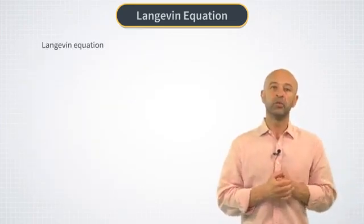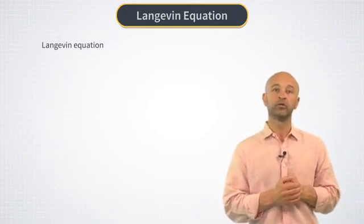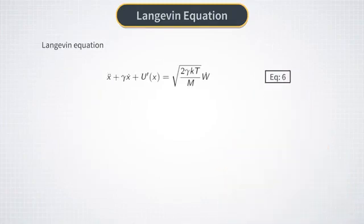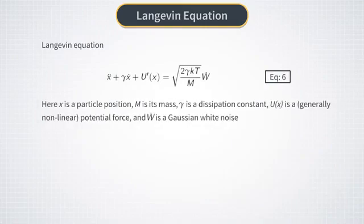The Langevin equation for a Brownian particle in an external potential is shown here in equation 6. In this equation, X stands for a particle position, dot X stands for its time derivative, and X with two dots means the second derivative in time. Parameter gamma describes diffusion in the system, and U of X is an external force potential.